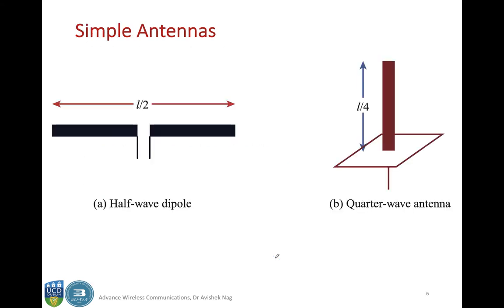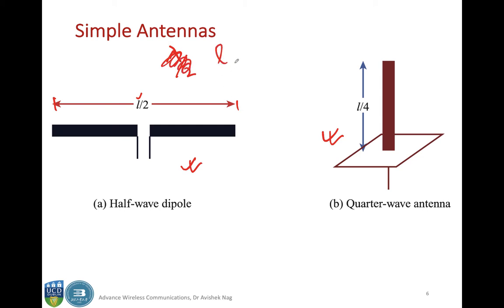Examples of simple antennas include the half wave dipole and the quarter wave dipole. The concept is that the length of the antenna is made equal to half the wavelength of the signal it is emitting. So if the electromagnetic wave has wavelength L, the antenna length is made L/2. For a quarter wave dipole, the antenna length is made one fourth of the wavelength L.